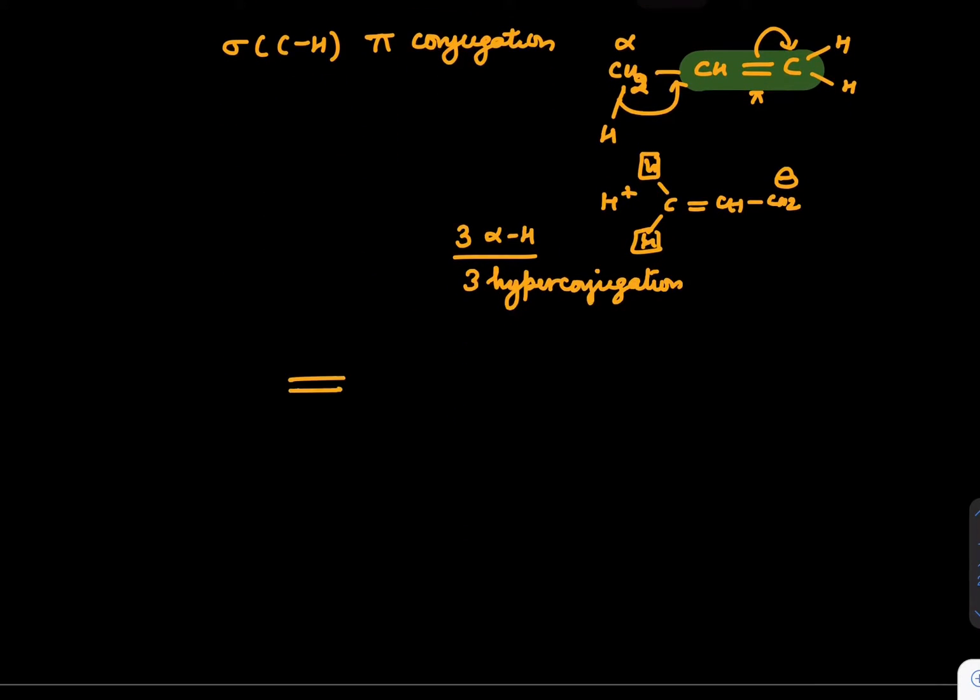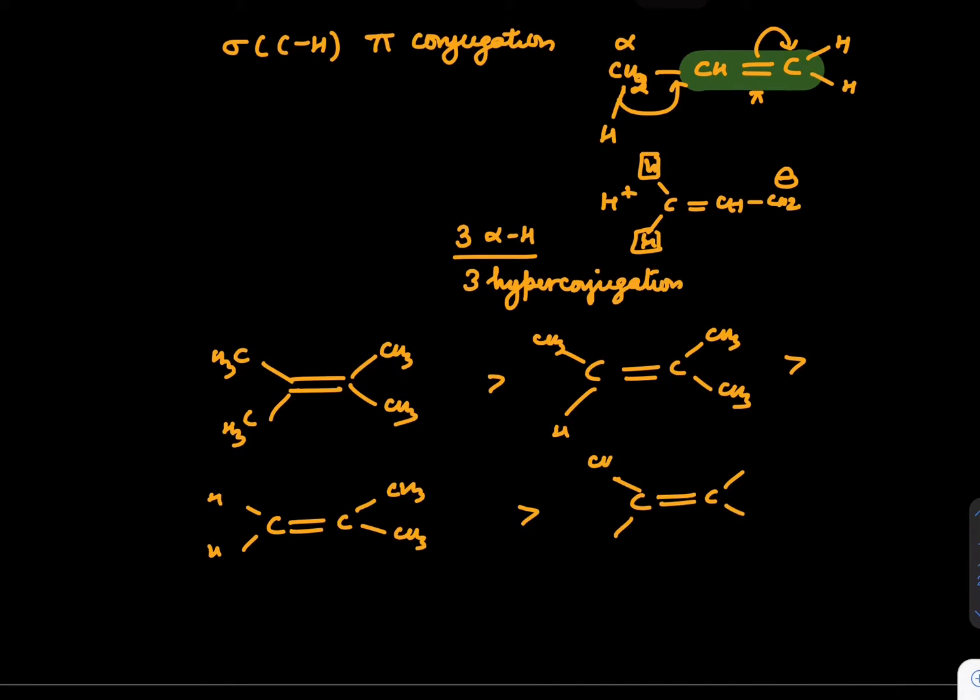Hence we get an alkene having all CH3s here at all these places is much more stable than an alkene having at 3 places, and it is much more stable than an alkene having at 6 places like this, and much more stable than a trans alkene, and also stable than cis alkene.